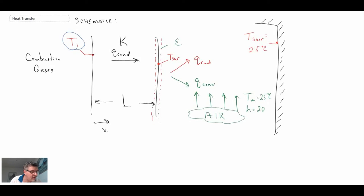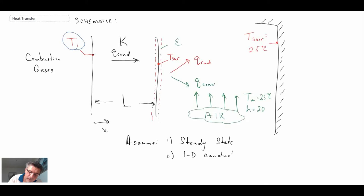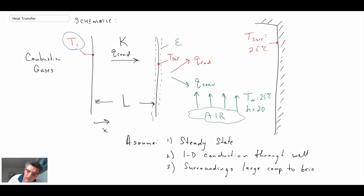A couple of assumptions we have here: first, steady state — meaning you're not changing any of the conditions. Second, 1D conduction through the brick wall. Third, the surroundings are large compared to the brick wall. And a fourth assumption is that we're dealing with a gray surface, which means the emissivity and absorptivity are equal to one another.